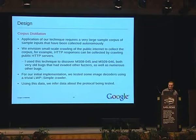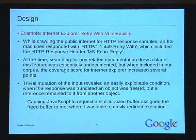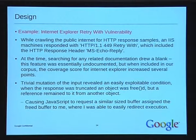Using the data I collected, I was able to infer data about the protocol being tested without even knowing what the protocol was. For example, while crawling the public internet for HTTP responses, an IIS machine responded with 'HTTP 1.1 449 Retry With' and included the HTTP response header 'MS-Echo-Reply.' I'd never heard of this before, and nobody I spoke with had heard of this before — searching for it drew a blank; it seemed to be an undocumented feature of Internet Explorer. But when I passed this to IE and got the coverage score, having this included absolutely increased the coverage score. It was clearly hitting some new code that hadn't been touched before.